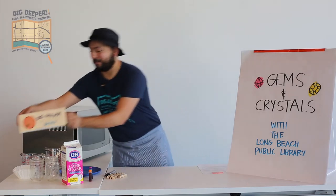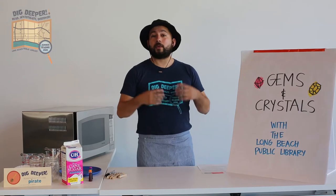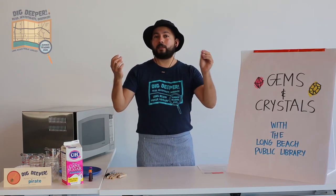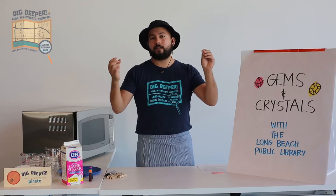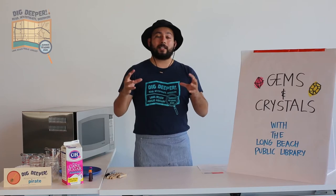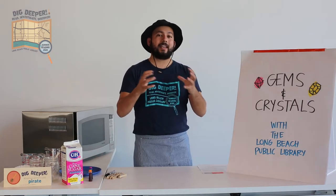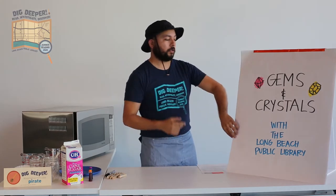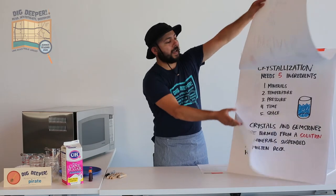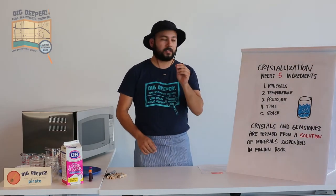Okay, so here we go. First and foremost, crystals and gems are formed from solutions underground. A solution is a liquid filled with little bits of a solid — the solid gets dissolved within that liquid, and later on as the liquid dries up or hardens, those little bits of solid end up forming together into crystals. For crystallization to happen, it needs five ingredients. The first one is minerals — those little bits of solid. The second one is temperature.